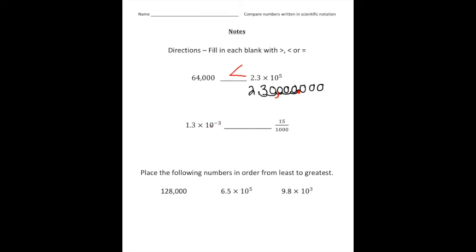Now for number two, the second problem we have 1.3 times 10 to the negative third power versus 15 one-thousandths. So again I'm going to convert this into standard form. So 1.3 times 10 to the negative third power.